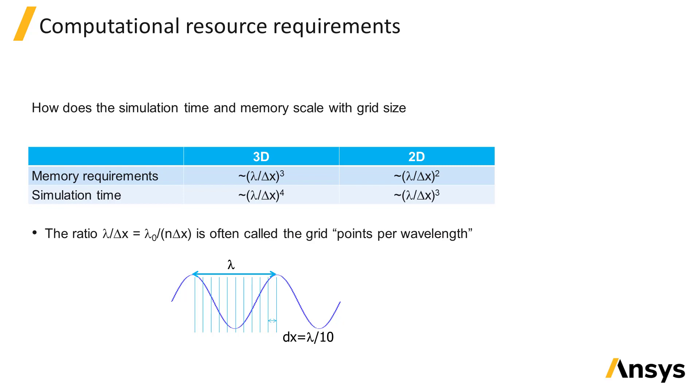I should note that this is a rule of thumb only and sometimes much smaller meshes are required to resolve geometric features or to correctly simulate plasmonic effects where high light confinement can occur. It is also important to note that the points per wavelength should be defined with respect to the wavelength in the medium and not the free space wavelength. Therefore, for similar accuracy, a smaller grid size should be used in materials with higher refractive index.